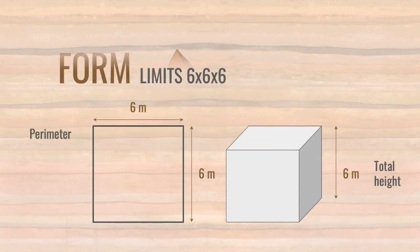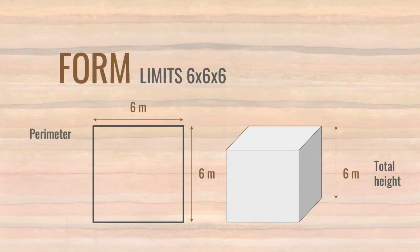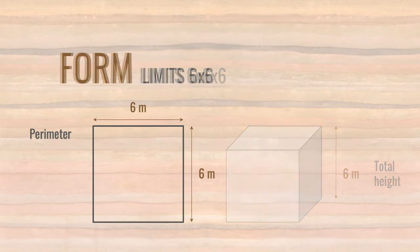Form. The basis of our project was the relationship between form, function, and materiality. Initially, we began with the limits of a 6x6 meter edge cube. We looked to start from simple and basic shapes, such as squares and triangles, and decided on a 6 meter edge square as our base, which was in line with what was requested.